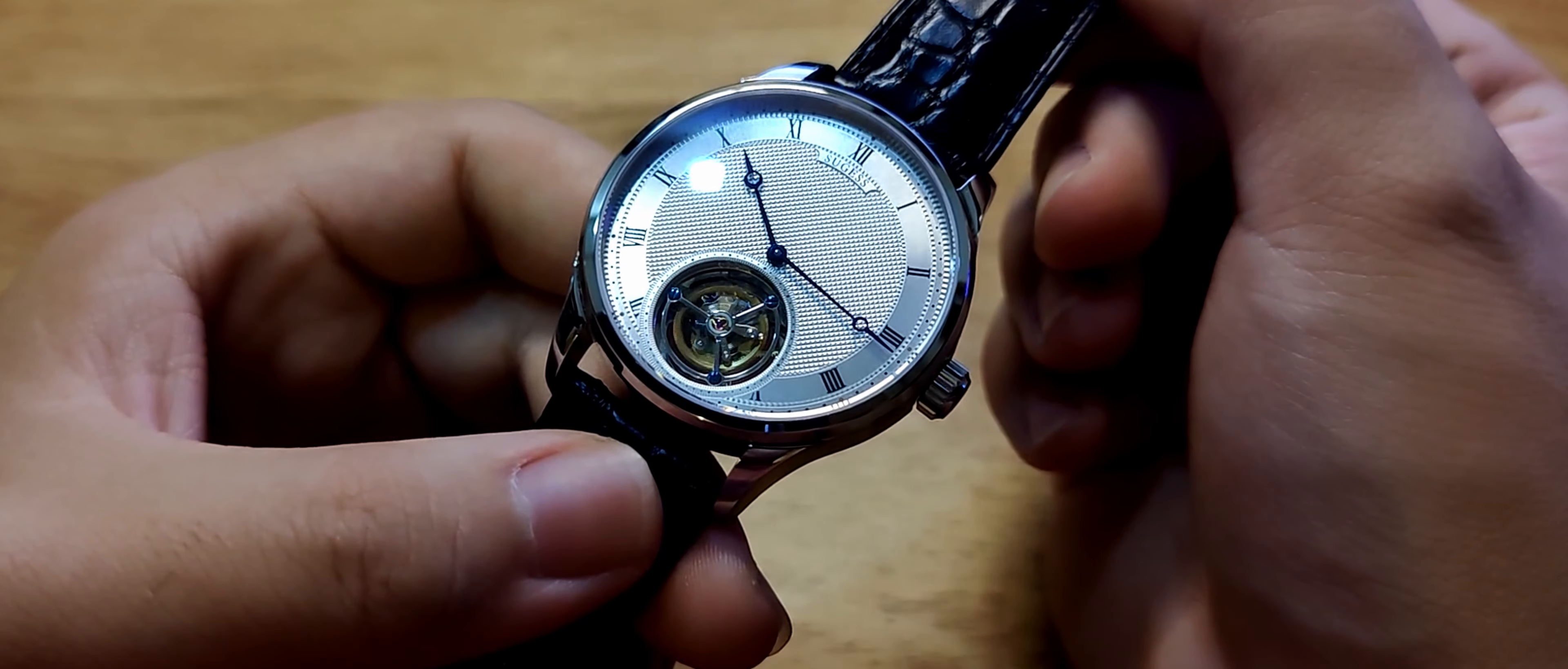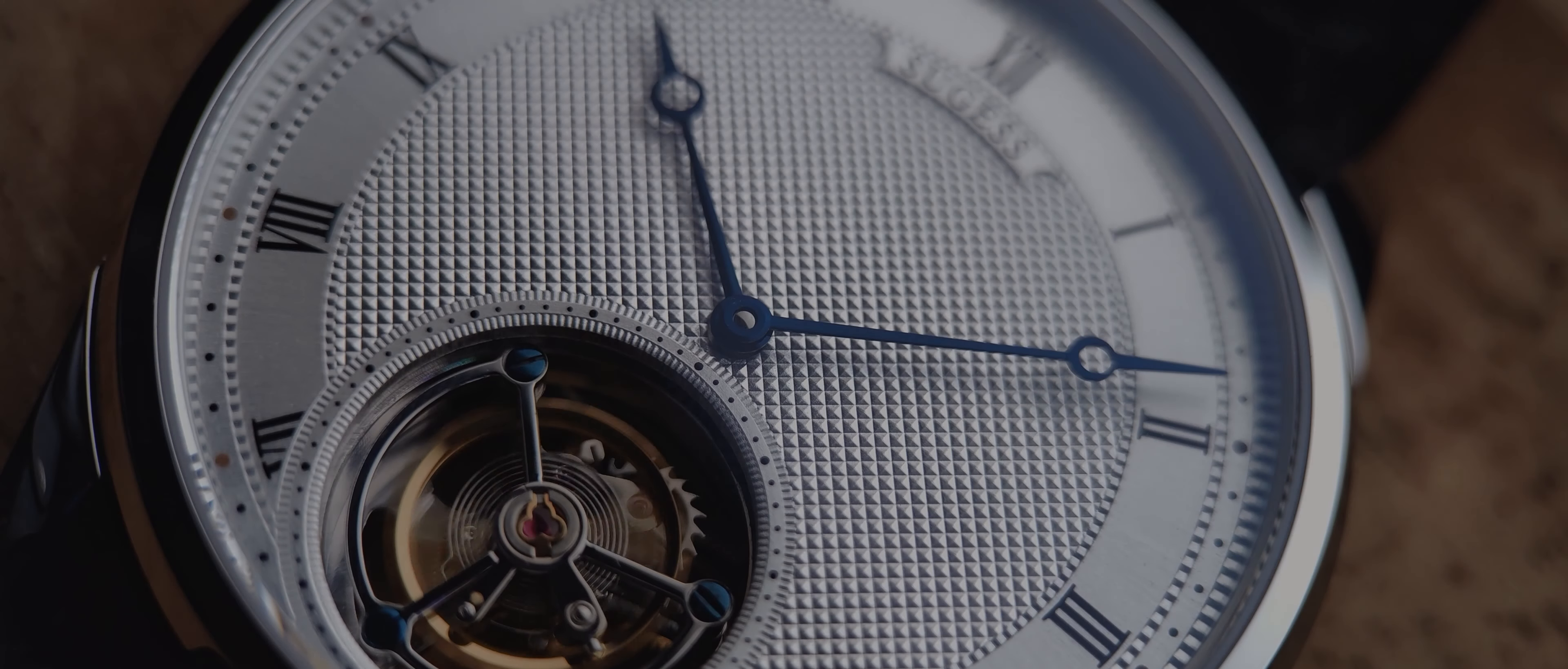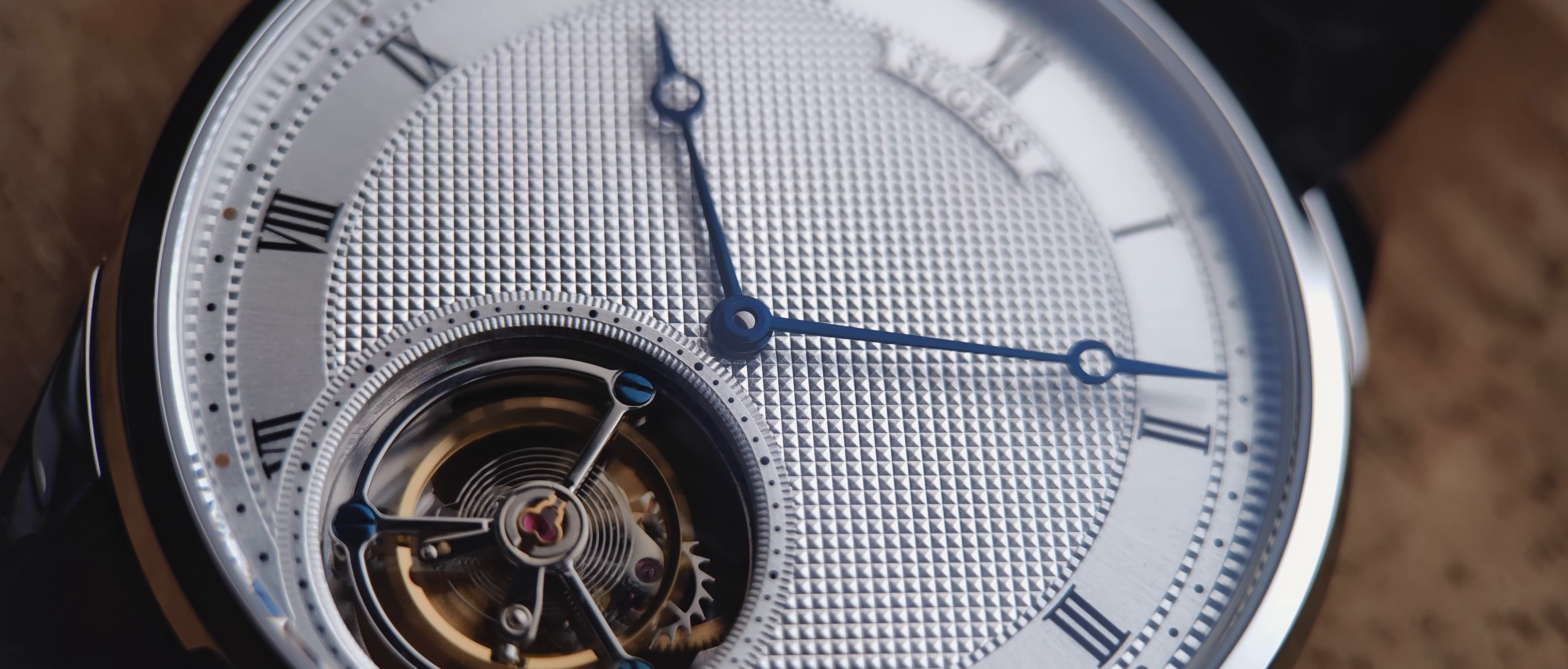The watch also comes with an anti-reflective coated domed sapphire glass and also a sapphire glass case back. This domed slab of sapphire displays the really magnificent dial and handset, with a window through the dial showcasing, of course, the tourbillon.